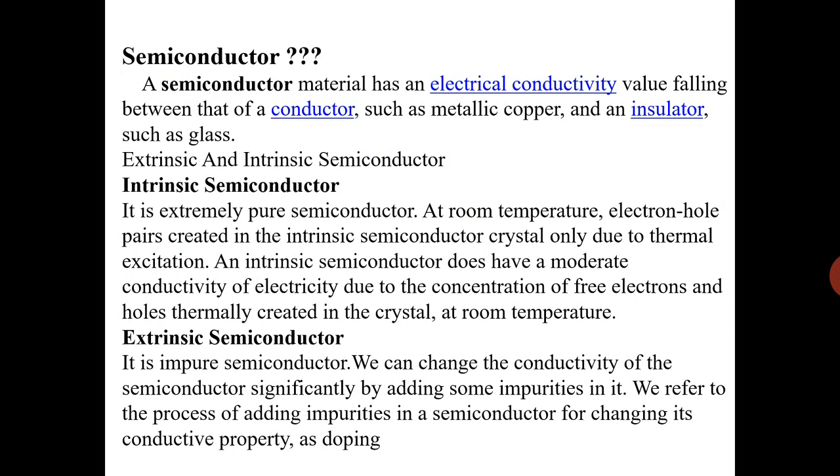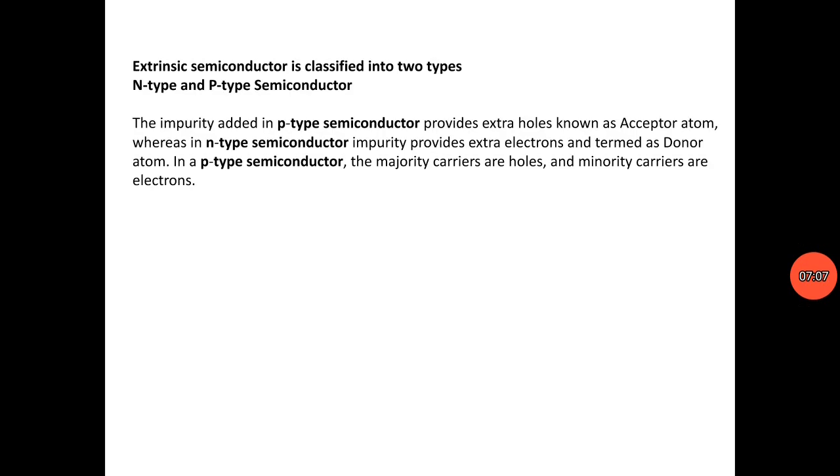Second one is extrinsic semiconductor. It is an impure semiconductor means there is additional material in semiconductor. We can change the conductivity of the semiconductor significantly by adding some impurities in it. To improve or to change the conductivity of the semiconductor, we add the impurities. We refer to the process of adding impurities in a semiconductor for changing its conductive properties as doping.